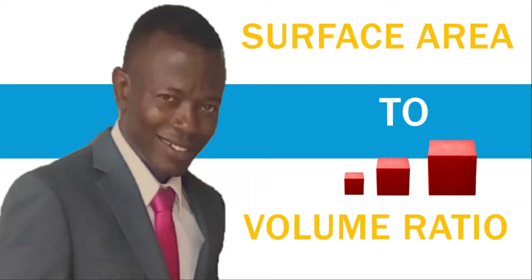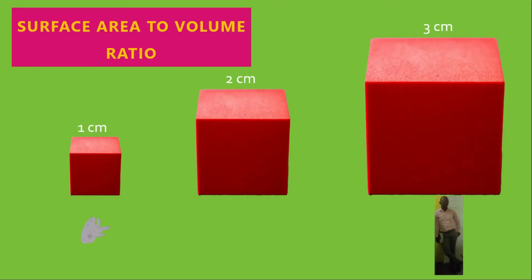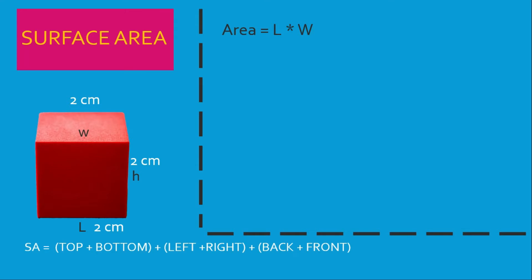Surface area to volume ratio is a comparison of surface area to volume. I will show you how to do the calculation in this video. We'll be using a cube to do the calculation, and the size of the cube you could determine based on what you want to do — so I chose one, two, and three centimeters, and I will be showing you the calculation here after.